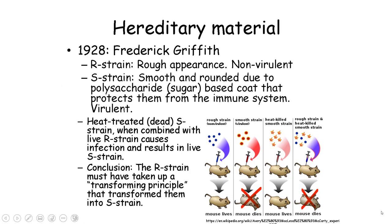An important step toward discovering DNA as the hereditary material was an experiment reported by Frederick Griffith in 1928. Griffith was studying pneumonia with the hopes of creating a vaccine. He used two strains of Streptococcus pneumoniae bacteria to infect mice. The rough strain bacteria was non-virulent and would not kill mice because the mouse's immune system was able to fight it off. The smooth strain bacteria was virulent and would kill the mice.